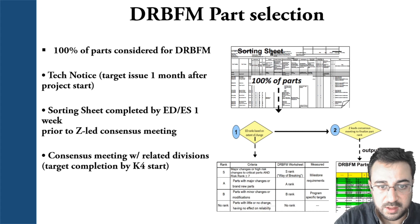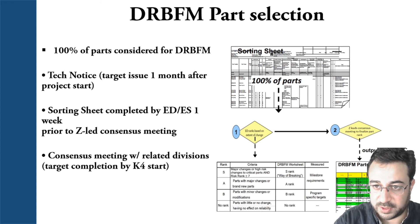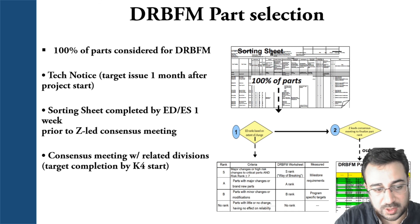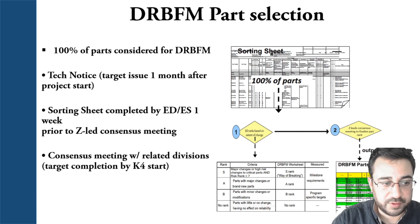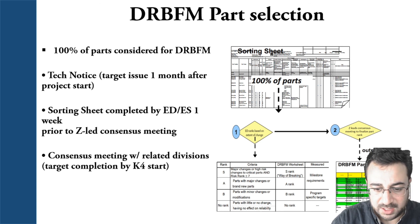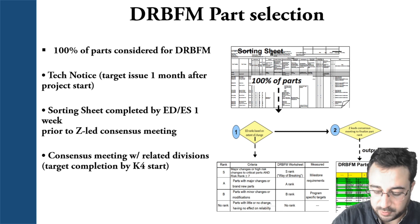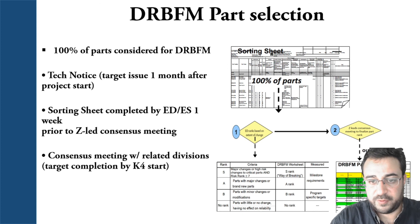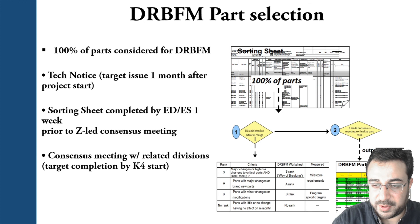For DRBFM part selection, 100% of the project or product parts are included — you can't avoid anything. The target issue needs to be one month after the project start; that's where you begin your DRBFM, though you can start as early as you want as long as there is a good visual understanding of the project. You sort and complete the sheet by the ED1 or ES1 milestone week, do meetings with related divisions, and make sure before production kickoff that you've scored all your DRBFM processes and can confirm you avoided all potential concerns.